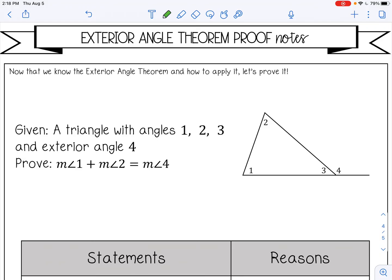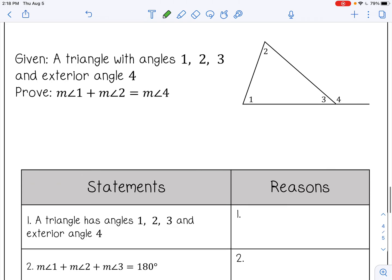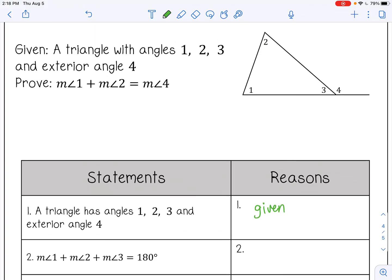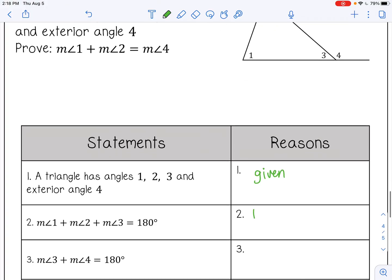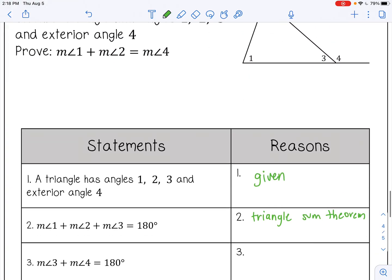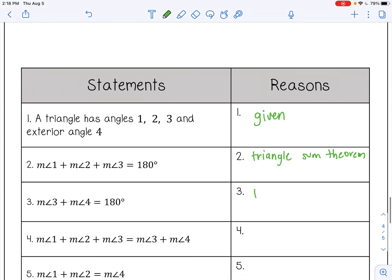The exterior angle proof. So let's prove why this works. So we have a triangle here with angles 1, 2, and 3, and then an exterior angle of 4. So that would be given. Number 2 says the measure of angle 1 plus 2 plus 3 equals 180. And that is the triangle sum theorem. Or you can just put the three interior angles in a triangle equal 180. And then 3 plus 4 equals 180. That's a linear pair here. They form a line.